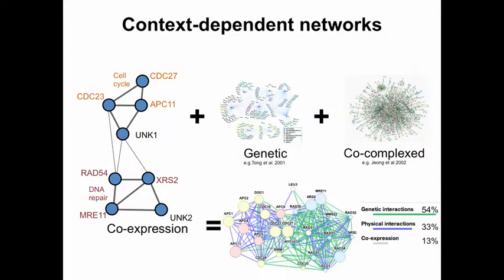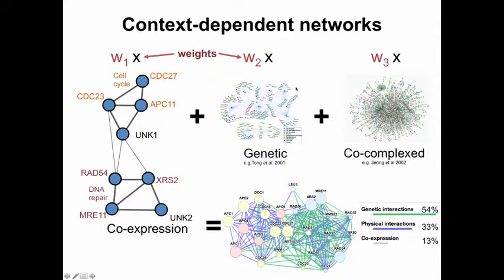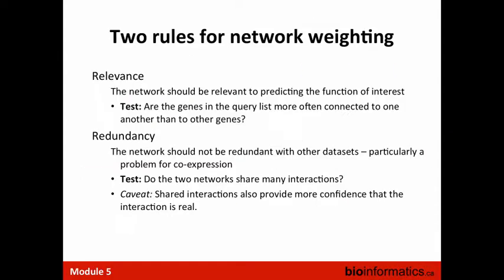If your list is long enough you can weight networks based on how well they reproduce that list — what I'm calling the context-dependent network. By asking how well the network reproduces the gene list, you're basically setting weights based on two rules: is the network relevant for this function, meaning are the genes in the query list most often connected to one another rather than to other genes?